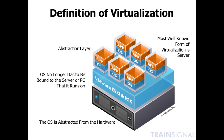Before learning about anything, you should first have a definition of what it is. The textbook definition is that virtualization is an abstraction layer, but what that really means is that the operating system no longer has to be bound to the server or PC that it runs on. The OS is abstracted from the hardware — the operating system isn't installed directly on the hardware. Instead, there's a layer in between the physical server and the operating system called the virtualization layer.